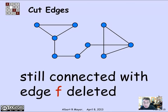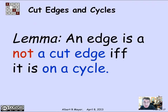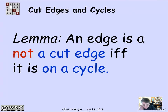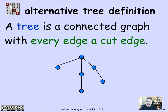Now we get a simple way to characterize trees in terms of cut edges, because an edge is not a cut edge if and only if it's on a cycle. If you think about that: if it's on a cycle and you cut an edge out of the cycle, then everything on the cycle is still connected by going the other way around the cycle. And if it's not on a cycle, then deleting it means there won't be two paths between its endpoints, so it will separate them. So another way to define a tree is to say a tree is a connected graph where every edge is a cut edge.